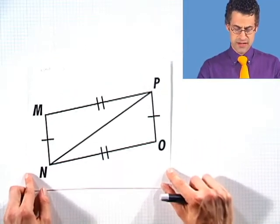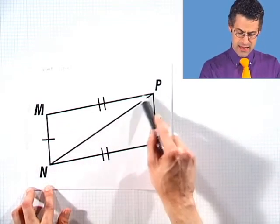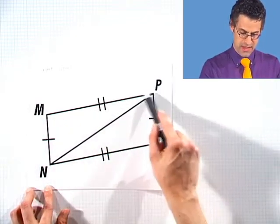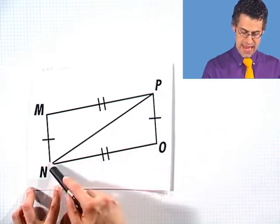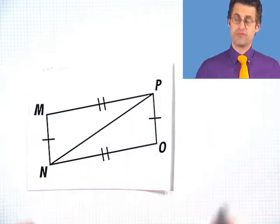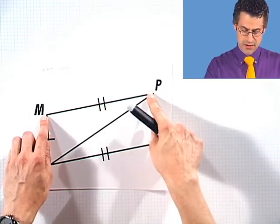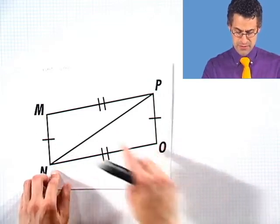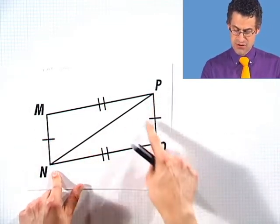Let's see if we can justify that triangle MNP is congruent to triangle OPN. We're given a lot of information here. This notation means that this segment right here is congruent to this segment because there's two marks here. This segment, we can see, is congruent to this segment.